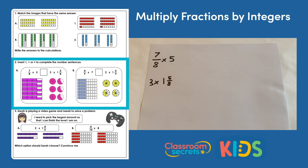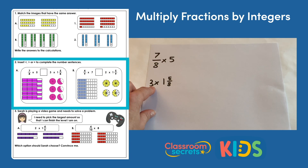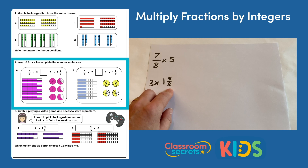Question two says insert less than, greater than, or equal to to complete the number sentences. For a, we have seven eighths multiplied by five on the left, and three multiplied by one and five eighths on the right. If we do these multiplications we can compare the two results.